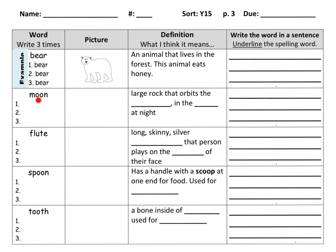Say this word with me: moon. A moon is a large rock that orbits the — we all know that the moon goes around the earth, in the sky at night. It looks like it's in the sky to us, even though it's actually in outer space.